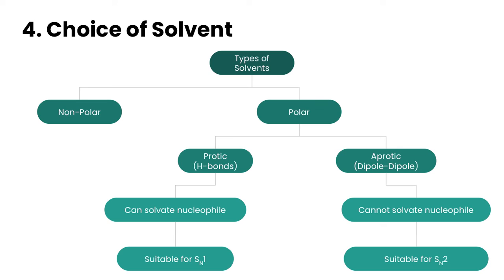Finally, the last factor that affects rate of nucleophilic substitution reactions is the choice of solvent. In terms of solvents, there are two main types: polar and nonpolar solvents. Polar solvents can be broken down into two different types as well. You can have aprotic, which means that you have dipole-dipole forces but you don't have hydrogen bonds, whereas protic means that you have hydrogen bonding present.